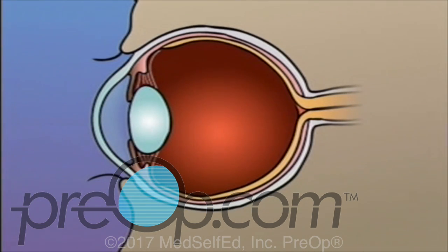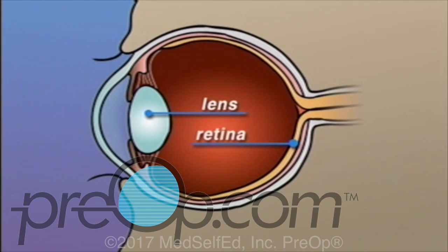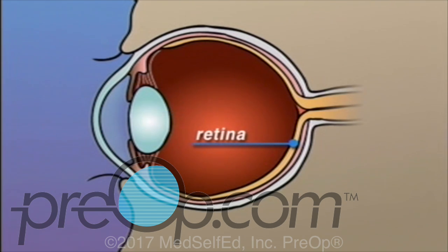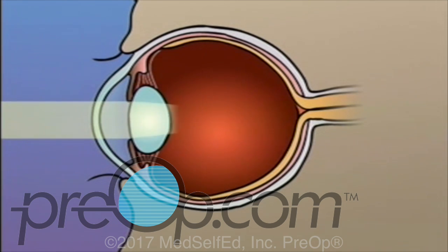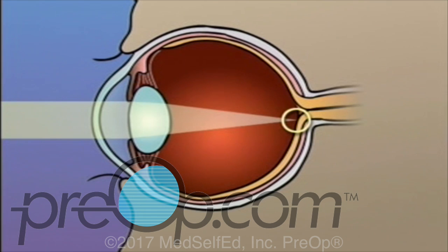The human eye is constructed like a camera, with a clear lens in the front and light-sensitive tissue at the rear. This tissue makes up the retina, which acts like a photographic film. In an eye that has perfect vision, light rays passing through the pupil are focused by the lens to fall precisely at the center of the retina.